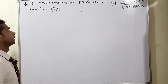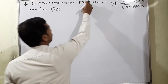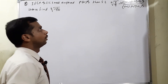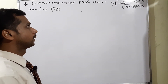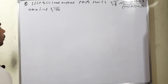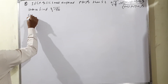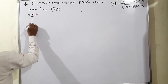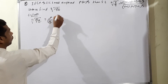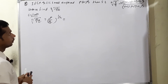Moving to Question 8 from Exercise 5.4. If p − q is small compared to p or q, show that the nth root of (p/q) is approximately (n+1)p + (n−1)q over (n−1)p + (n+1)q. Given: nth root of p/q = (p/q)^(1/n).